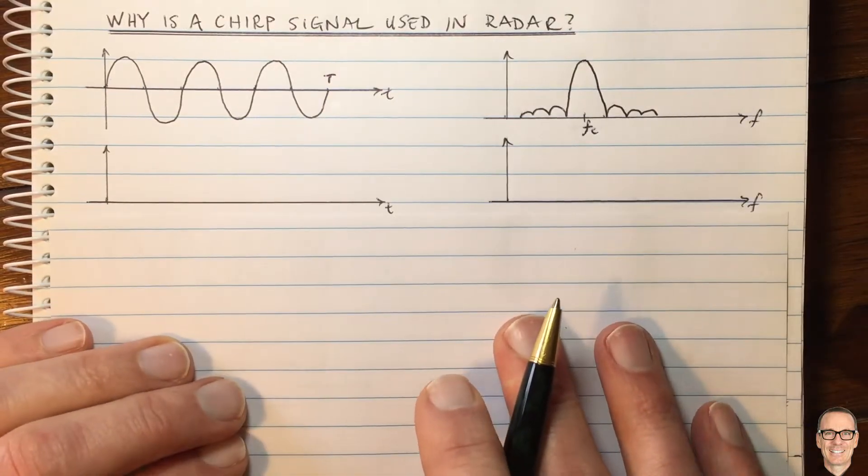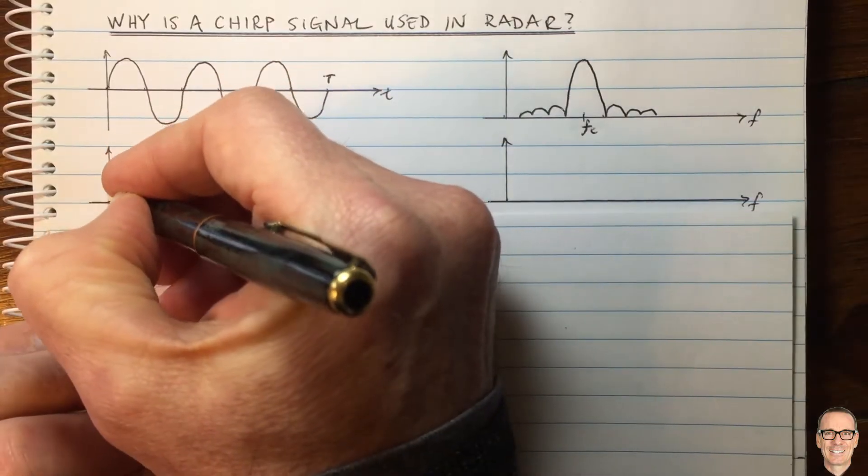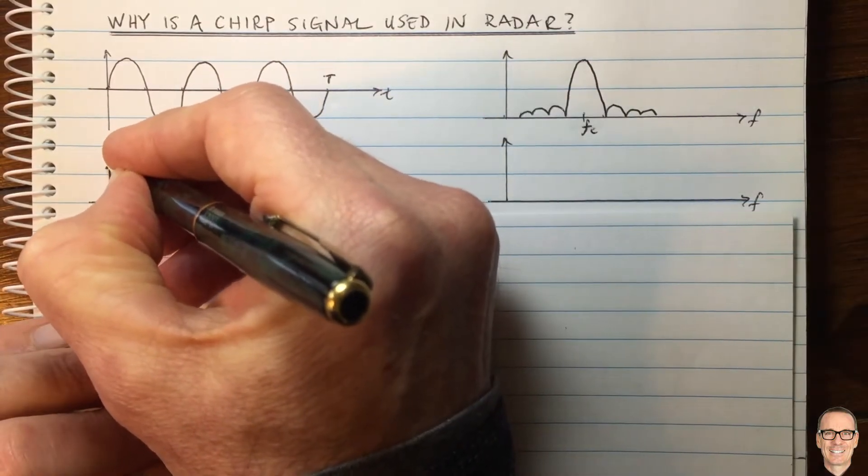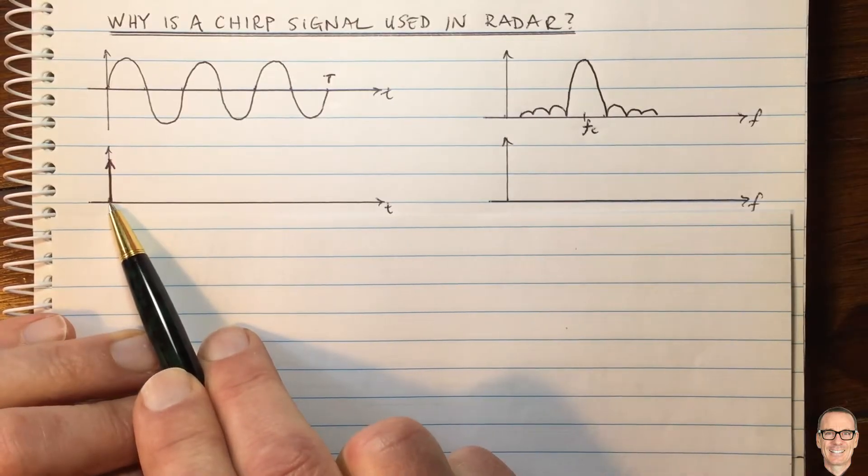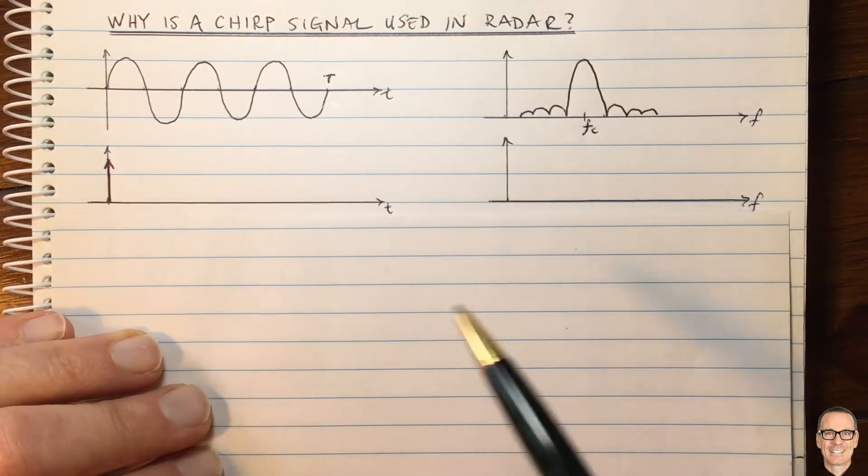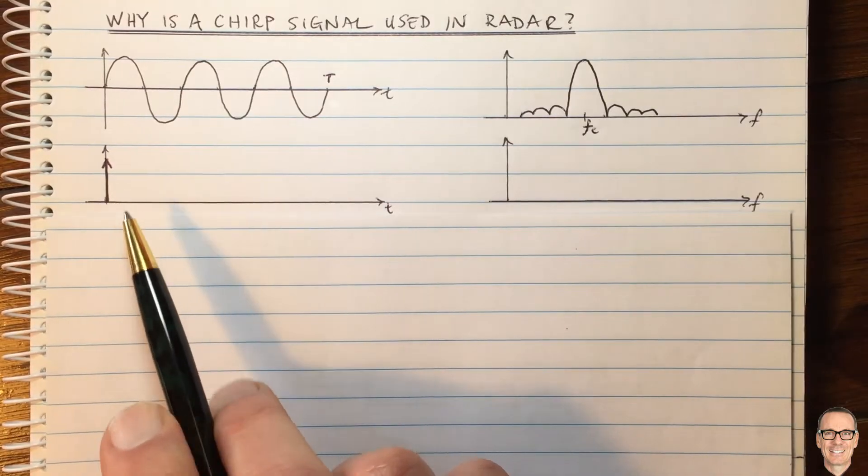So in this case, instead of sending this waveform, we would want to send just a very sharp delta function. And then we're getting incredible time resolution, infinite time resolution, if this is an exact delta function.